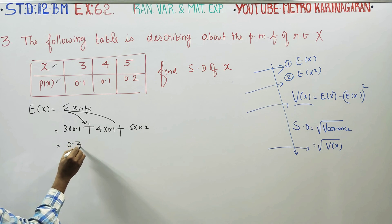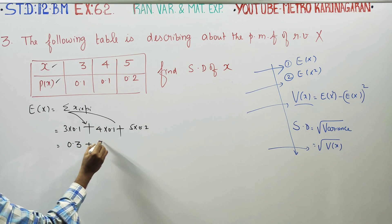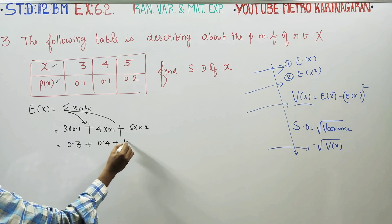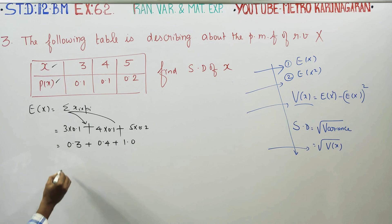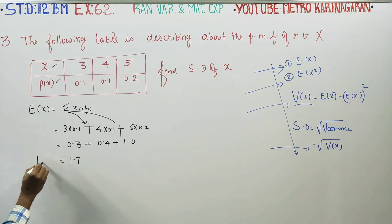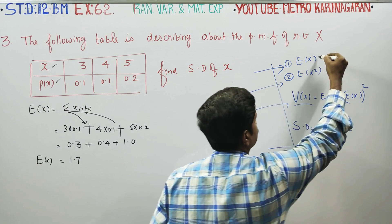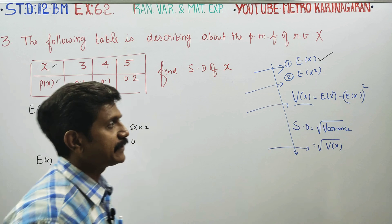Continuing: plus 0.3, plus 0.4, plus 0.0 — adding all gives 1.7. This is the expectation of X. The first process is ready. Expectation of X is 1.7.